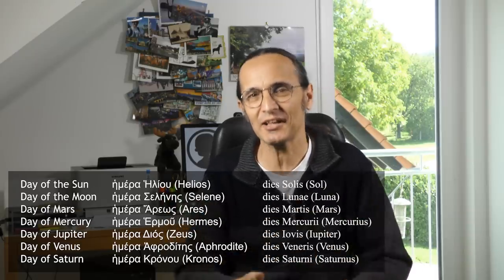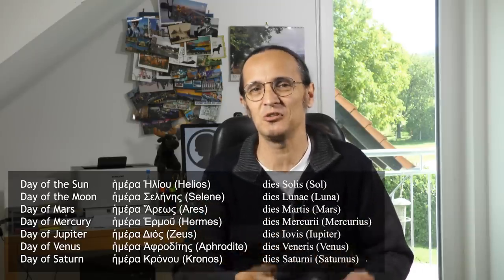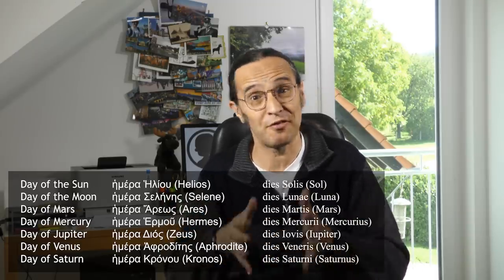The ancient Greeks took the Babylonian idea and translated the names of the days of the week into Greek using their names for the planets, which of course also represented some of their gods. And anything the Greeks could do, the Romans could do better — and they translated the Greek names into Latin by substituting in the names of their gods.